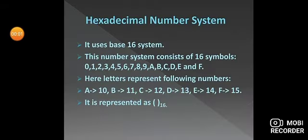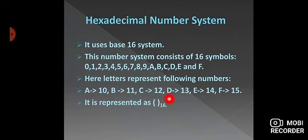Let's talk about the hexadecimal number system. It uses base 16 and consists of 16 symbols: digits 0 to 9 and alphabets A to F. Each alphabet has a value — A is 10, B is 11, C is 12, D is 13, E is 14, and F is 15. After counting 0 to 9, we continue with A to F. If a number has base 16, it is a hexadecimal number.